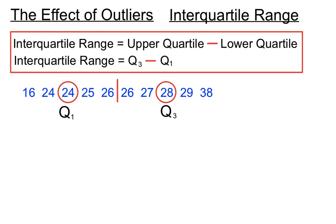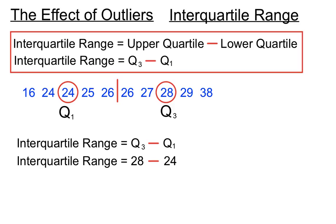For interquartile range, we would be doing Q3 minus Q1, which in this case is 28 minus 24, and we get an interquartile range of 4. That's a measure of the spread of these scores, and that's going to be helpful in our calculations to see whether a particular score is an outlier or not.